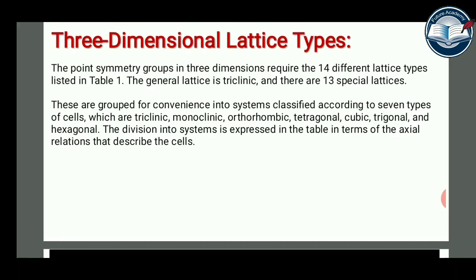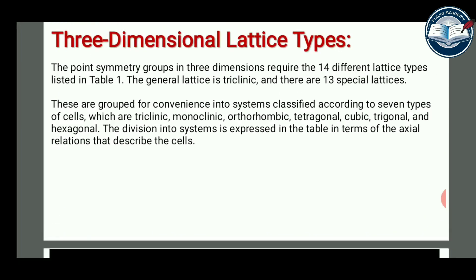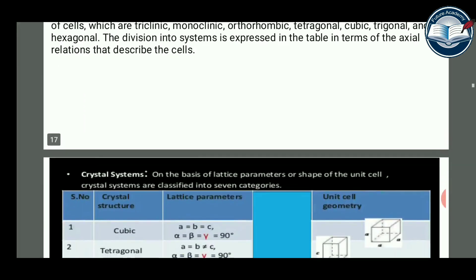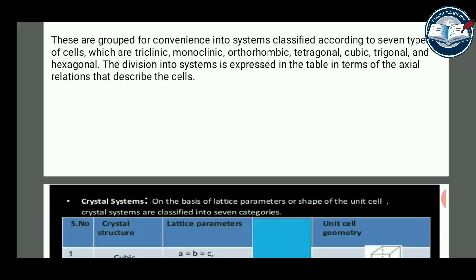For three-dimensional lattice types, the point symmetry groups in three dimensions require fourteen different lattice types. The general lattice is triclinic, and there are thirteen special lattices. These are grouped into seven crystal systems classified according to the type of unit cell: triclinic, monoclinic, orthorhombic, tetragonal, cubic, trigonal, and hexagonal.